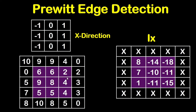Now let's go to the second pixel. Again we will put the center of the kernel on this required pixel. So negative 1 will be on 9, 0 on 9, 1 on 4, negative 1 on 6, 0 on 6, 1 on 2, negative 1 on 9, 0 on 8, and 1 on 4.